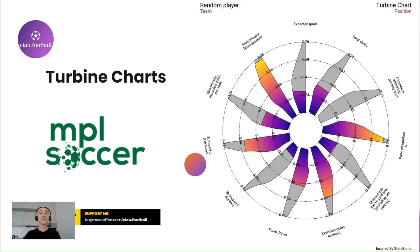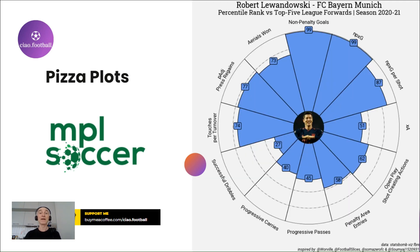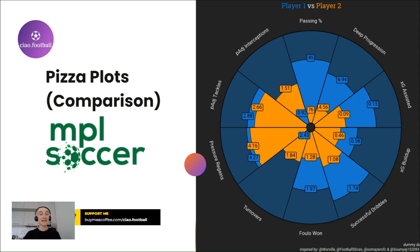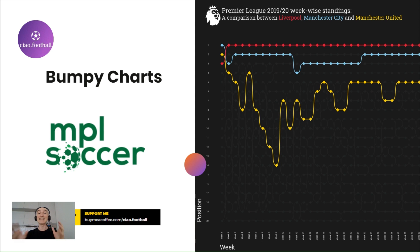One of the alternatives to radar charts are turbine charts, though they are not very popular. As for pizza plots, we may view them as a type of radar chart — they can be colorful and also have a dark theme. Next up are bumpy charts, which are a great way to visualize team dynamics over time and can also be used for comparing different players.